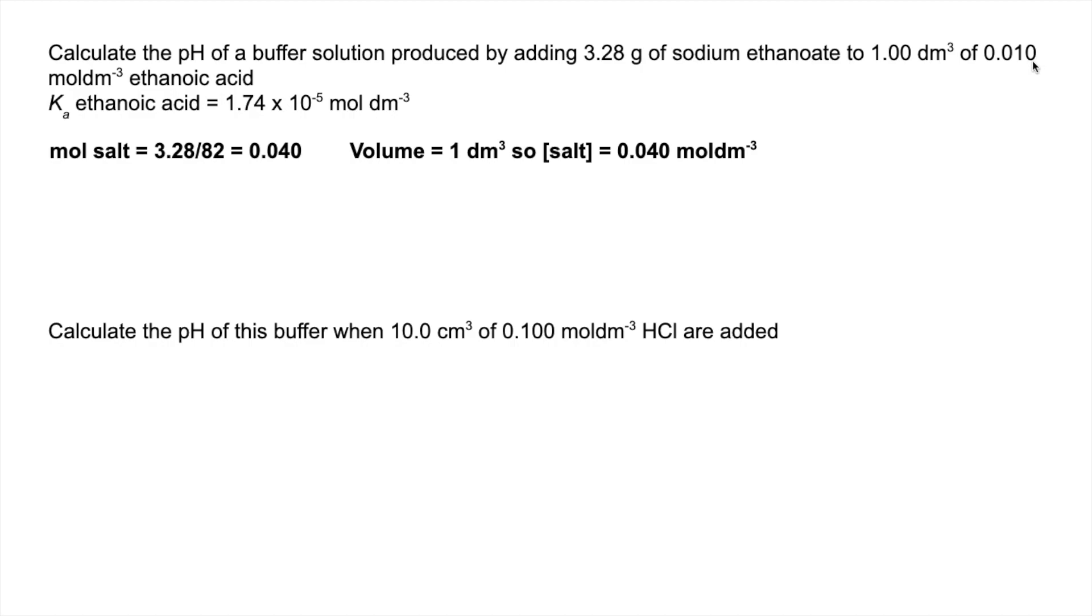We're given the acid concentration 0.01 moles per decimeter cubed, so we've got everything now for acid over salt. So we just put the numbers in, we get an H+ concentration of that, minus log 5.36.